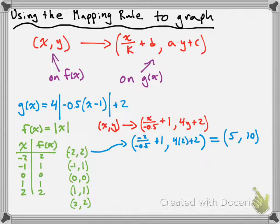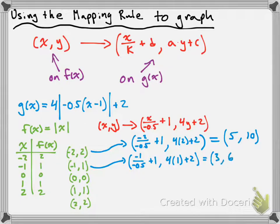Doing (−1, 1): x becomes negative 1 divided by negative 0.5 plus 1, and y becomes 4 times 1 plus 2. Negative 1 divided by negative 0.5 is 2, plus 1 is 3. And 4 times 1 plus 2 is 6. So I get (3, 6) as another point on my transformed function.